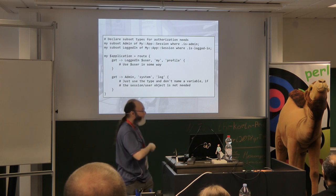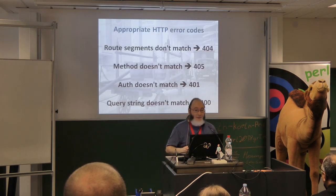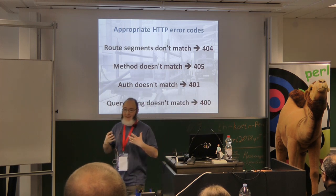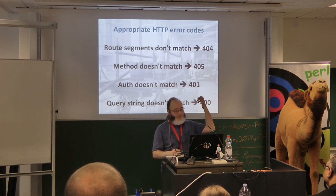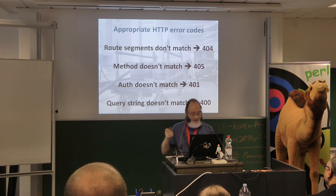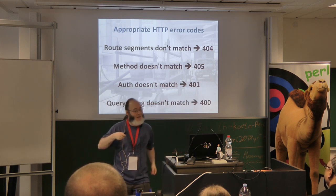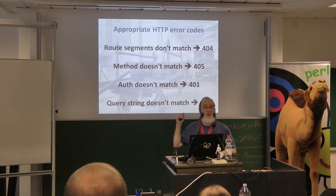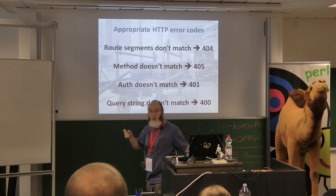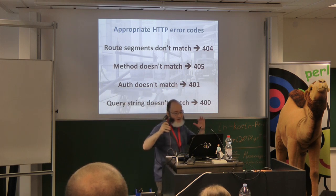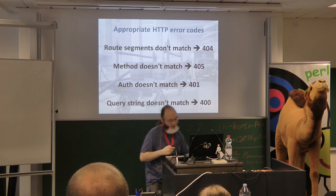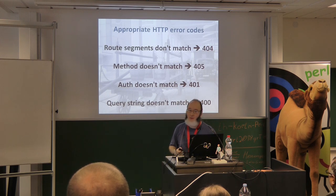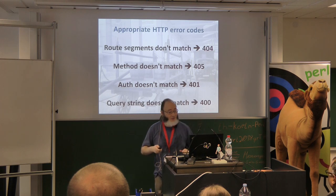I've tried hard to make the router do the right thing automatically. One way is by taking the declarative signature and producing the correct HTTP error responses on problems: if a route segment doesn't match, that's a 404; if the method is wrong — no POST handler but only GET and you do a POST — that's a 405; if auth doesn't match, it's a 401; if the query string doesn't match, we produce a 400 Bad Request.